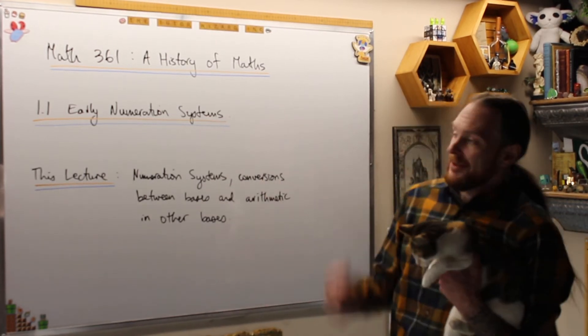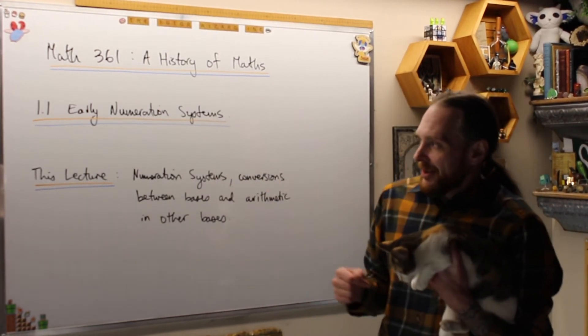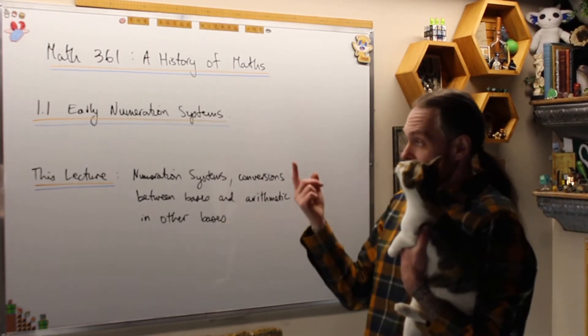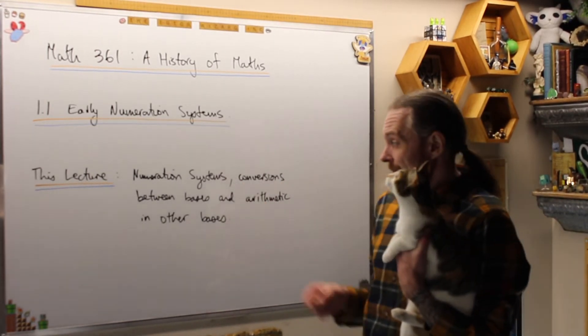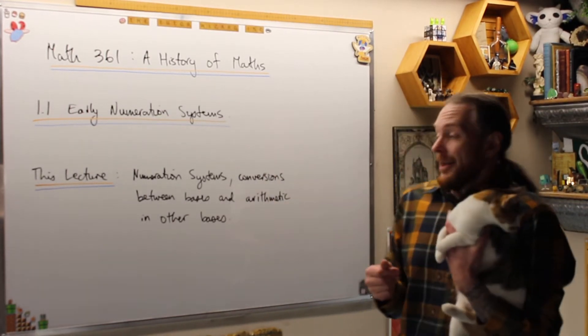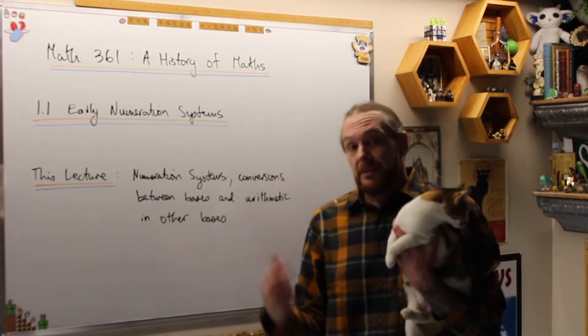Please subscribe right here. We're doing Math 361, which is the history of math. Right now we're going to do section 1.1 on early numeration systems. I know that's exciting. In particular, this lecture will cover numeration systems, conversion between bases, and arithmetic in other bases. Let's get to it.